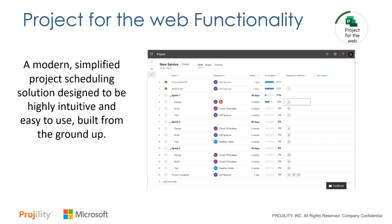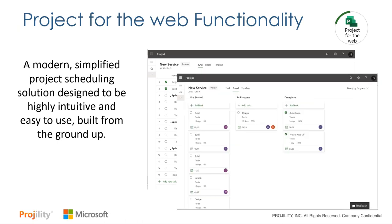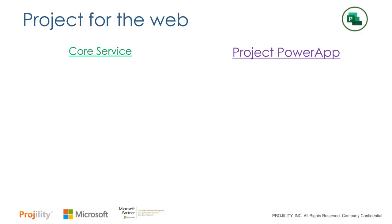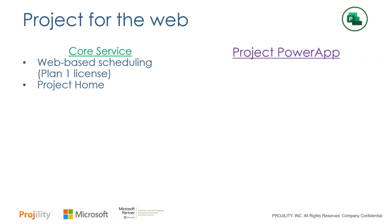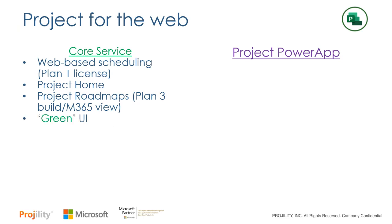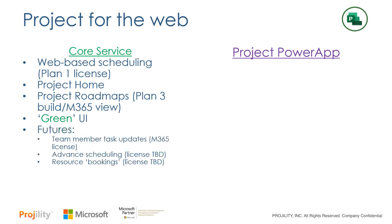Summarizing Project for the Web: it's modern, simplified project management — schedule-based with very light scheduling, but also visualization in Kanbans, timelines, and traditional Gantt charts. There are really two components. You've got the core service, which is the web-based scheduling tool hooked up to the Plan 1 license. You've got access to Project Home for quick and easy access to your projects, and access to Project Roadmaps, which require a Plan 3 license to build, but anyone in Office 365 can view them without a license as long as they're a licensed M365 user. This is what Microsoft calls the Green User Interface, where you're going to build a project schedule — a very basic use case.